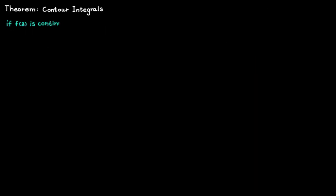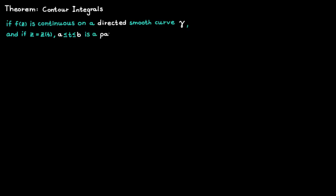If a function is continuous on a directed smooth curve gamma — where a smooth curve is simply a curve that does not cross itself and has no sharp corners — and if we are able to find some parameterization of gamma, then the integral of the function f along the curve gamma is given by a specific expression. In this expression, c is our parameterization of gamma, and a and b are the constants for the starting and end point of our variable t.